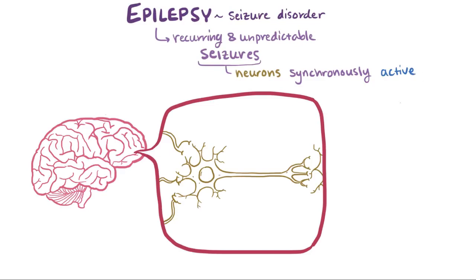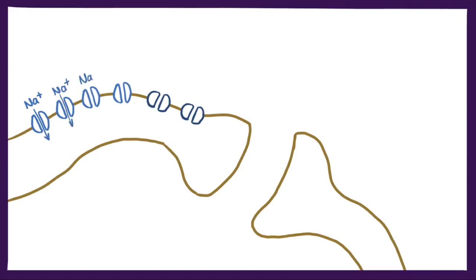When neurons are active, I mean that they're firing, or sending a message using electrical signals relayed from neuron to neuron. And if you look at a neuron under a microscope, each electrical signal that passes through it is really just ions flowing in and out through protein channels.